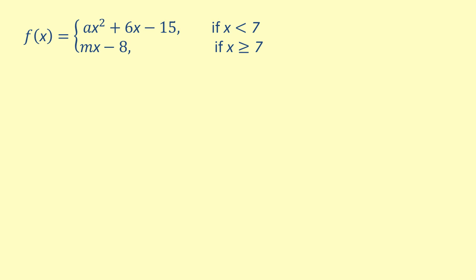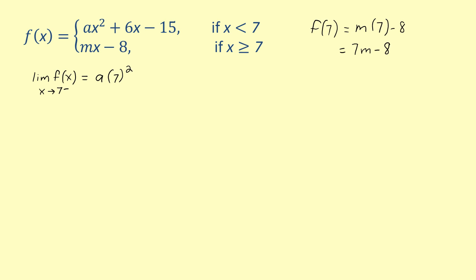We will start by using continuity. In order for our piecewise function to be continuous, the value of the function as x approaches 7 from the left must be equal to f of 7. We use the definition of the function to find f of 7. f of 7 equals m times 7 minus 8, which is equal to 7m minus 8. Now we need to find the limit of the function as x approaches 7 from the left. Using what we know about limits, this equals a times 7 squared plus 6 times 7 minus 15. Simplifying each term gives 49a plus 42 minus 15. Combining like terms, the limit of the function as x approaches 7 from the left is 49a plus 27.